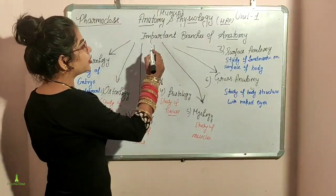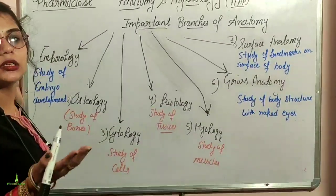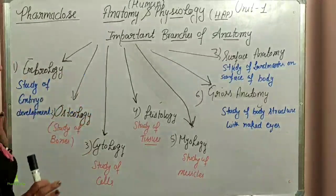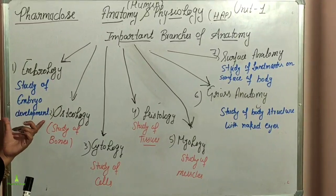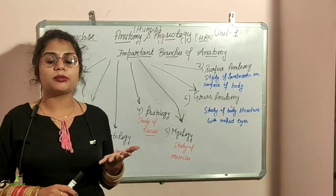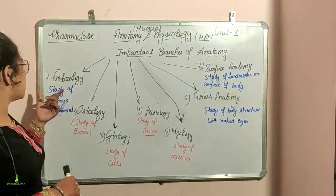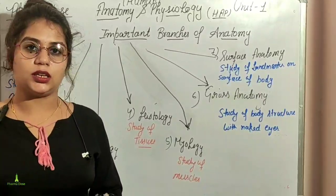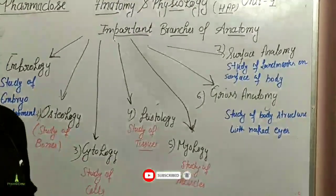Next we start with the important branches of anatomy. First is Embryology — the study of embryo development, how the human body grows and develops structurally. Next is Osteology — the osteo word relates to bone; osteology is the study of bones and bone disorders.